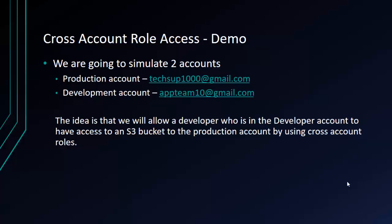The scenario we're trying to implement is that we have a developer who will be in our developer account — an IAM user in that account. That developer wants to have access to an S3 bucket that's in the production account. So instead of creating that same user in the production account, we are going to create a cross account role so that the developer from the development AWS account can access the S3 bucket in the production account. This is the scenario we're going to implement.